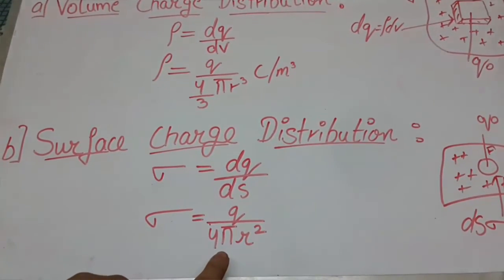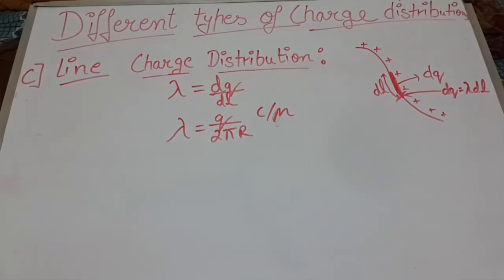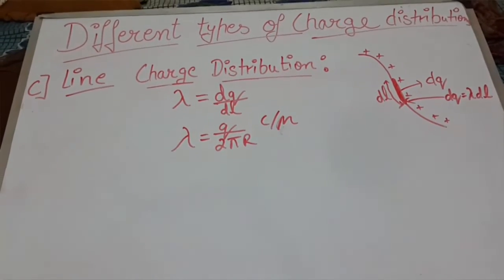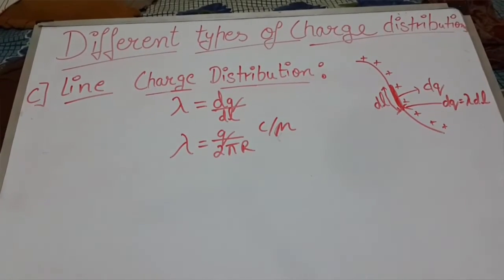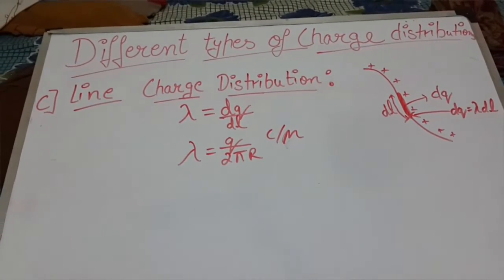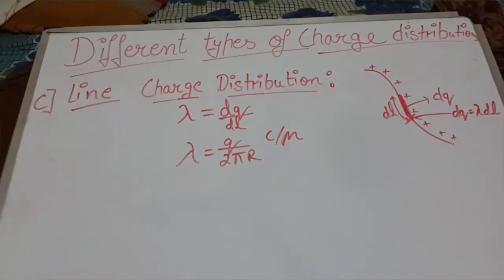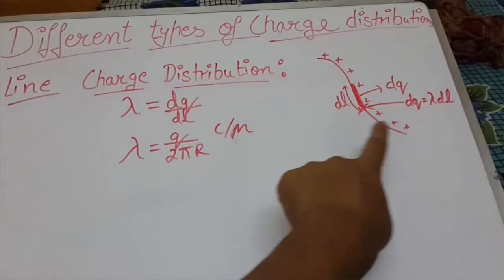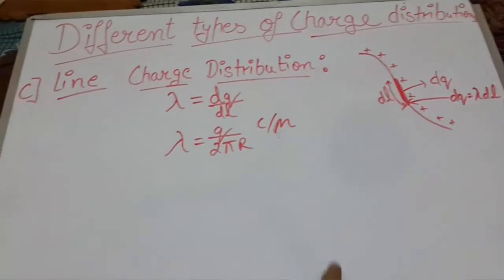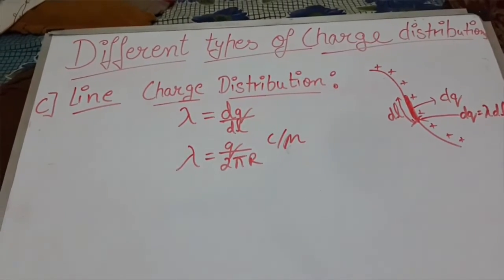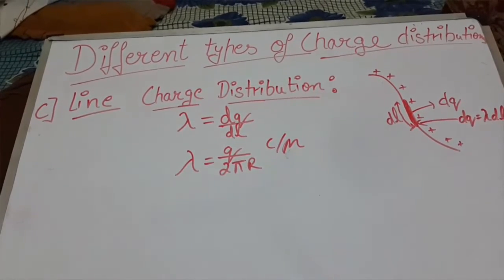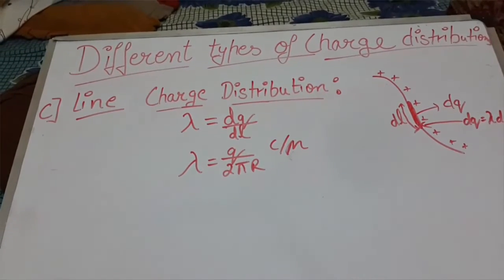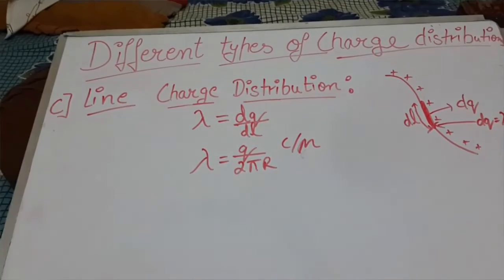The last type is line charge distribution. It is a charge distribution along a one dimensional curve or a line l in space. Here dl is the point and dq is the region of charge. So we can define that line charge density at any point on this line is equal to the charge per unit length.